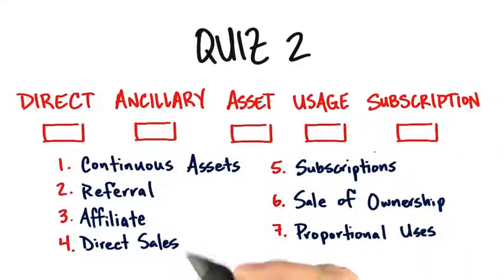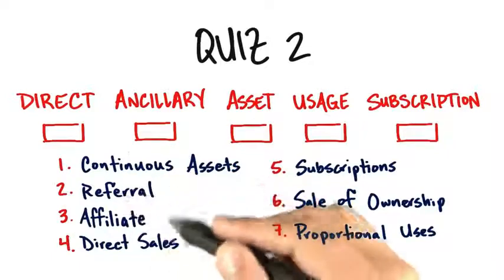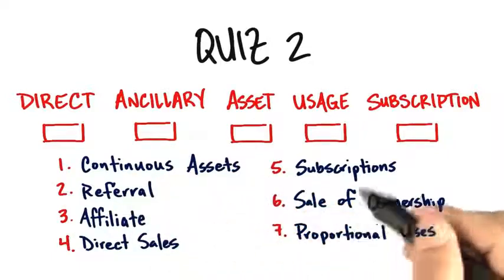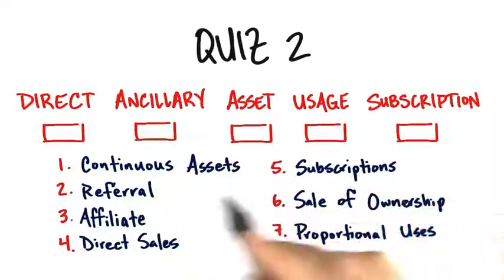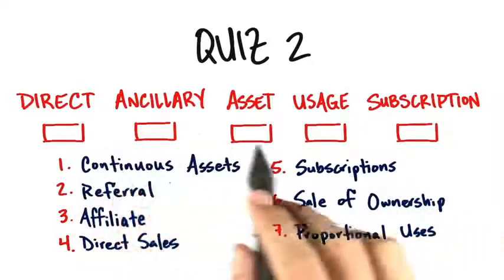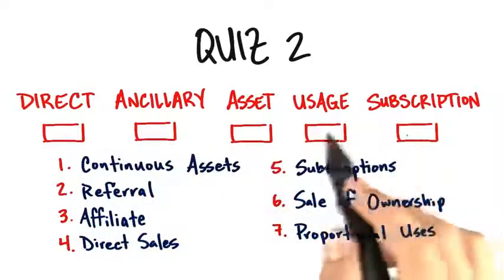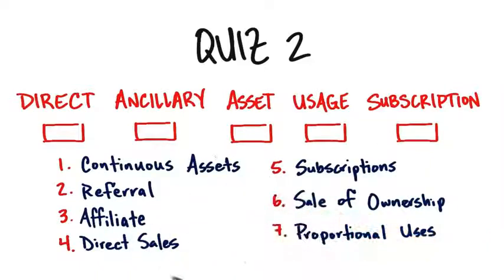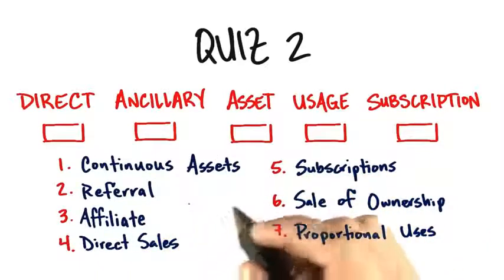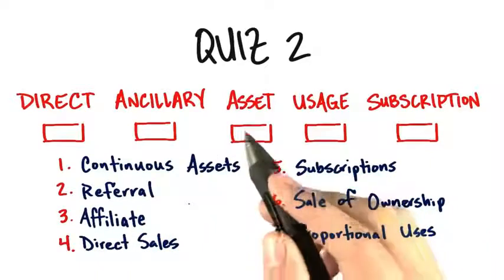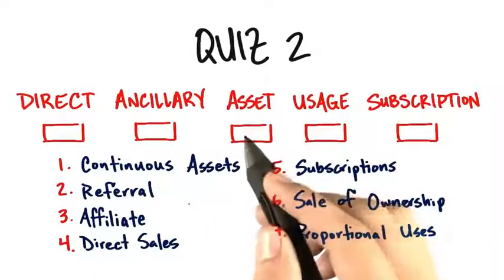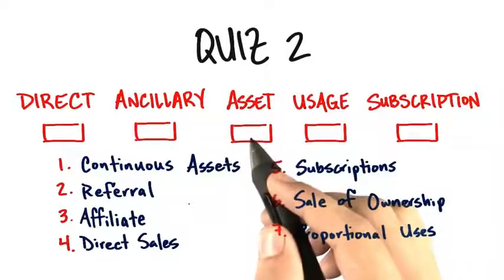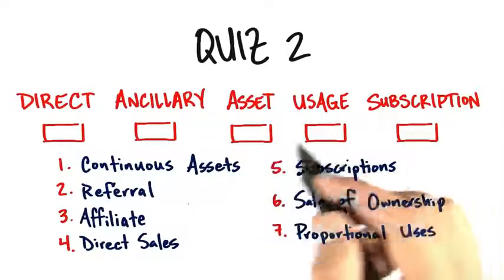Why don't we match the best examples that go in each box? Put the number that corresponds to what you think the best examples are in the boxes underneath the revenue stream examples on the top.